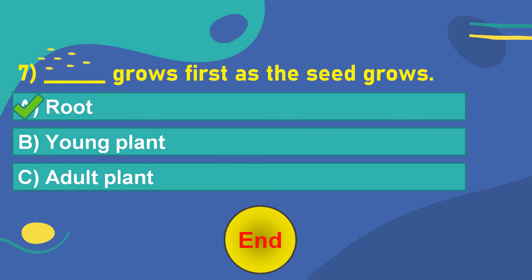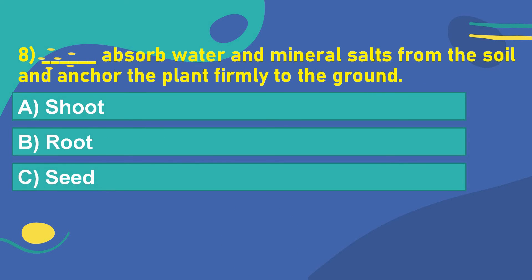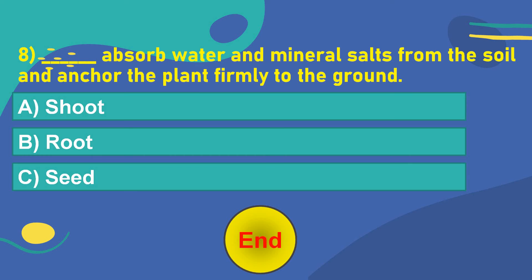The eighth question is: Dash absorbs water and mineral salts from the soil and anchors the plant firmly to the ground. Option A: Stem. Option B: Root. Option C: Seed. Think of the answer. Your time starts now. 5, 4, 3, 2, 1, 0. OK. The correct answer is Option B: Root.